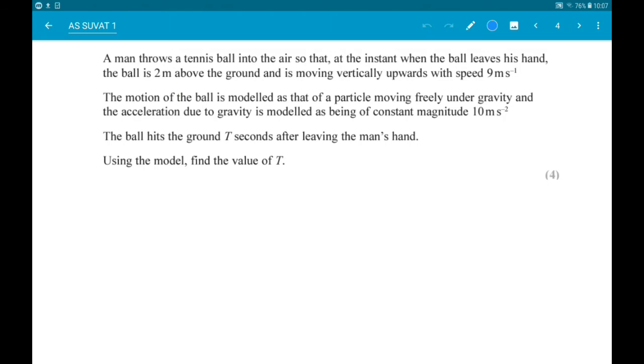Number 3. A man throws a tennis ball into the air so that when it leaves his hand it's 2 metres above the ground and moving vertically upwards with a speed of 9 metres per second. The motion of the ball is modelled as that of a particle moving freely under gravity, and the acceleration due to gravity is modelled with constant magnitude of 10 metres per second squared. The ball hits the ground T seconds after leaving the man's hand. We want to calculate T.